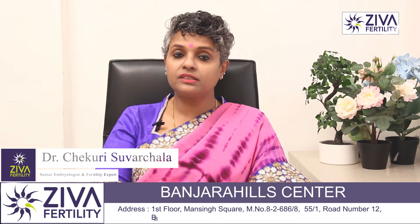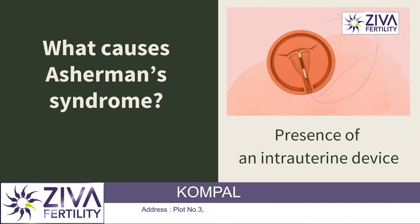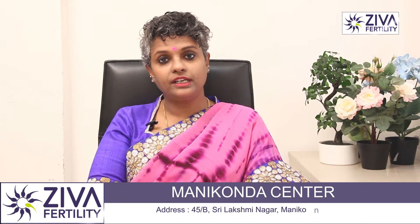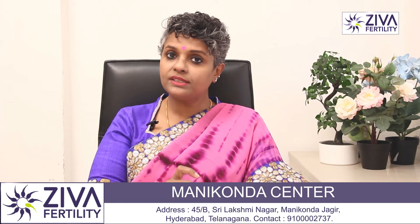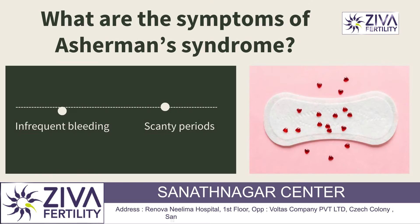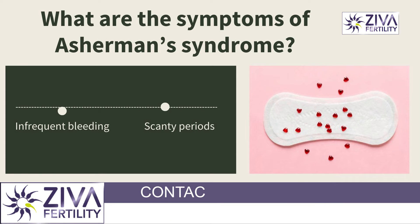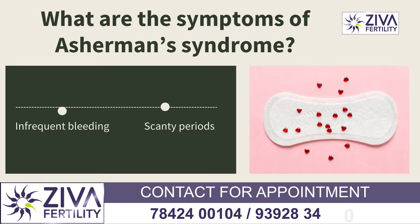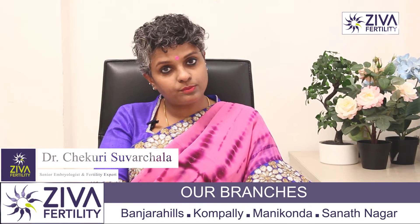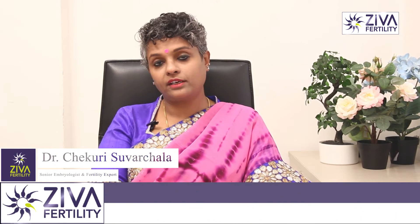The third cause is the presence of an intrauterine device. If there was a device such as a copper T, it is also possible that it may lead to adhesions in future. How do these patients present? There could be infrequent bleeding, bleeding between two periods, or scanty periods in such women, and therefore these need to be addressed and diagnosed properly.